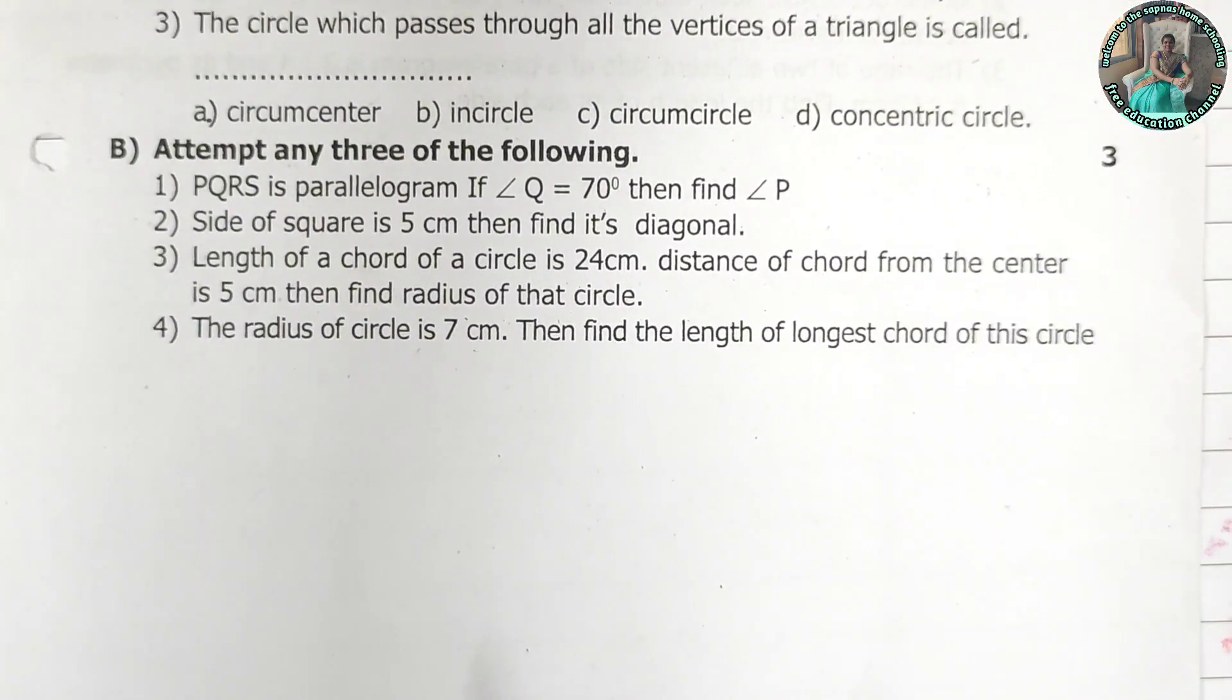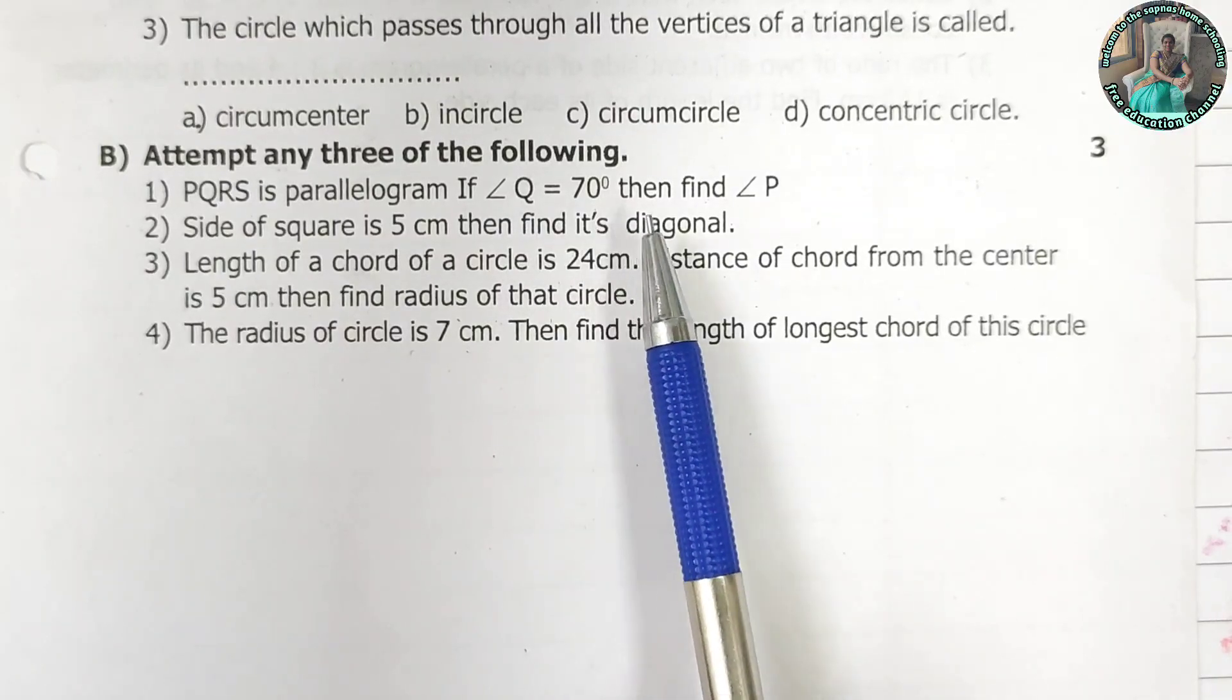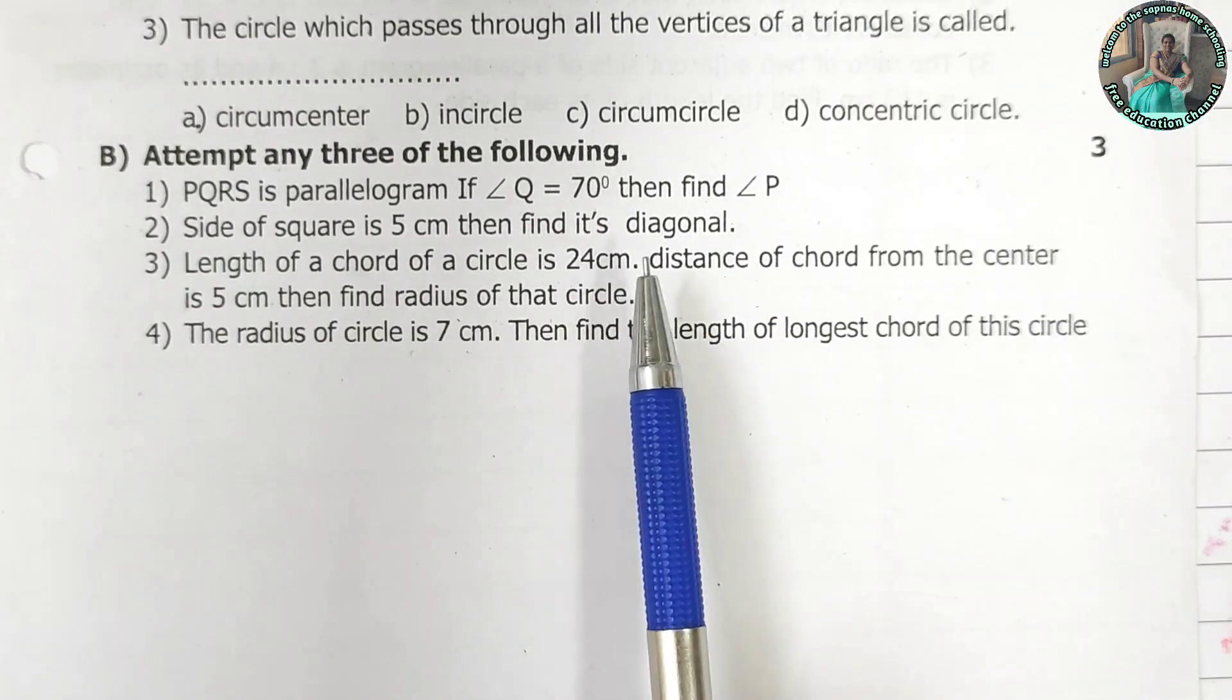Question b. Attempt any 3 of the following. PQRS is a parallelogram if angle q is 70 degree then find the angle p. Side of a square is 5 cm then find its diagonal.